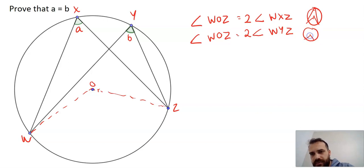And really, I've proven this now based on that other theorem. Because if angle WOZ equals 2 times angle WXZ, and angle WOZ equals 2 times angle WYZ, therefore 2 times angle WXZ equals 2 times angle WYZ. Therefore angle WXZ equals angle WYZ.